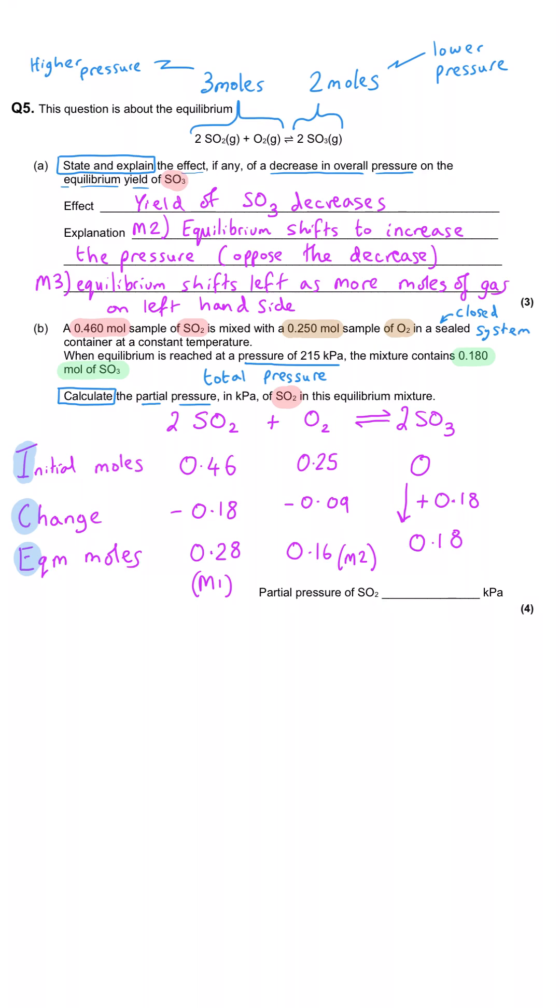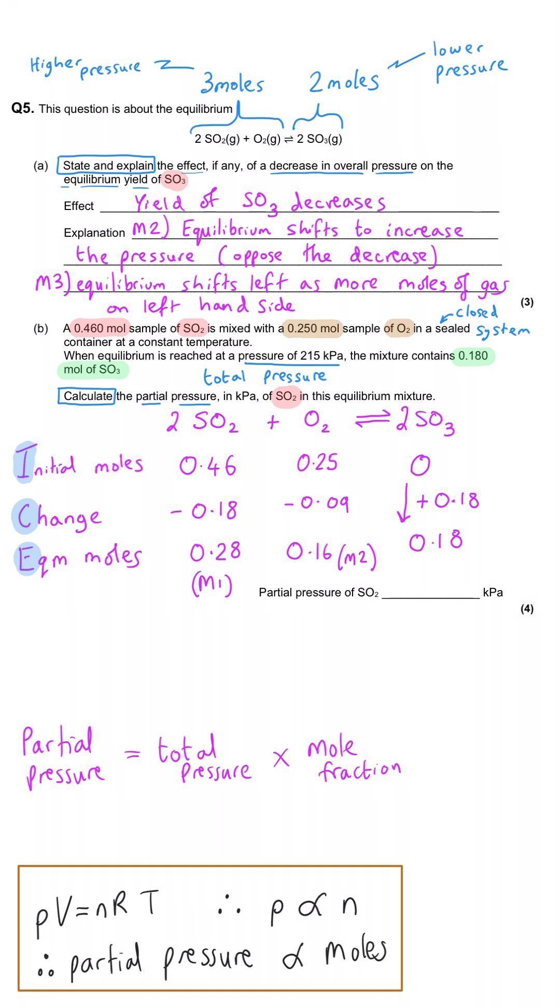Next, we have to remember that all gases behave ideally. So in other words, the pressure that they exert on their container is directly proportional to the number of moles that there are. So in other words, in our mixture, we've got a certain number of moles of each of our three gases. And together, those three moles are giving us a pressure of 215 kilopascals. And so to calculate what the partial pressure is, we need to work out what fraction of the total moles our particular gas is, so specifically our SO2.